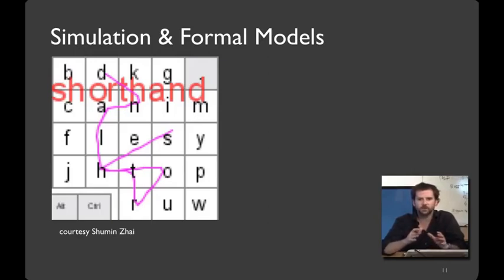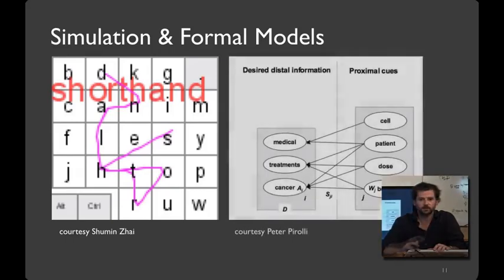Simulation has mostly been used for input techniques because people's motor performance is probably the most well-quantified area of HCI. And while we won't get to it much in this intro course, simulation can also be used for higher-level cognitive tasks. For example, Pete Paroli and colleagues at PARC have built impressive models of people's web-surfing behavior. These models enabled them to estimate, for example, which link somebody is most likely to click on by looking at the relevant link text.